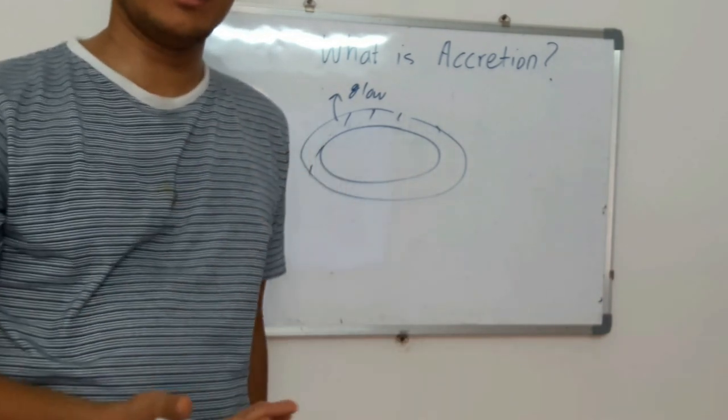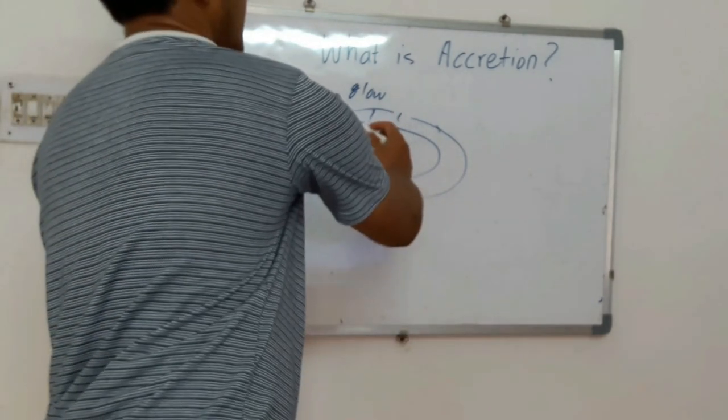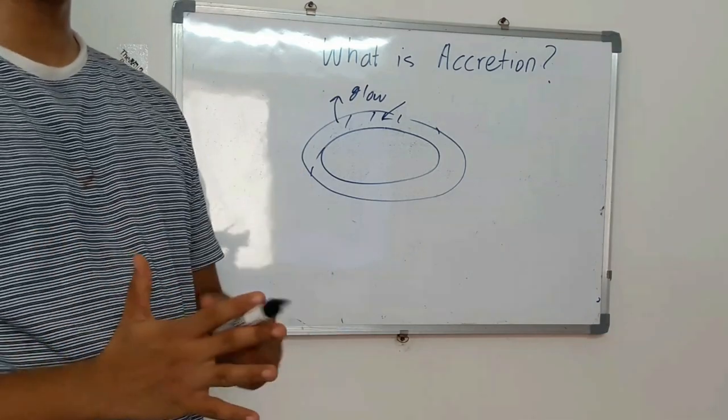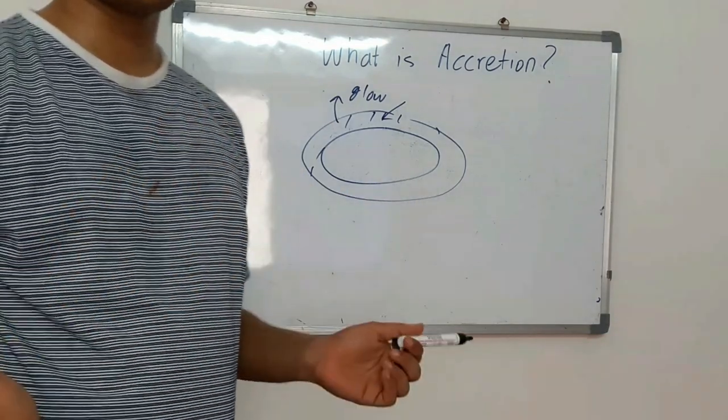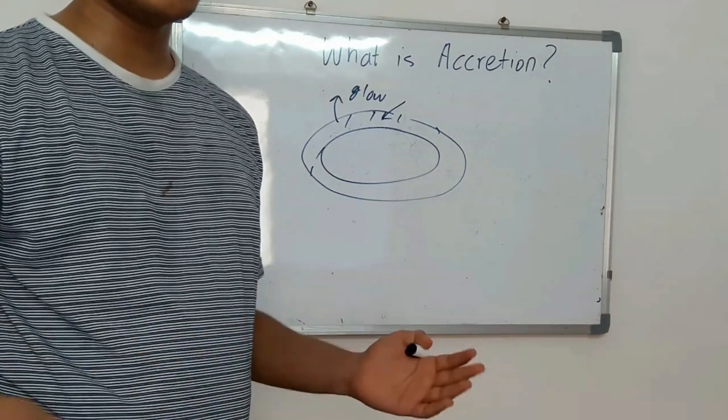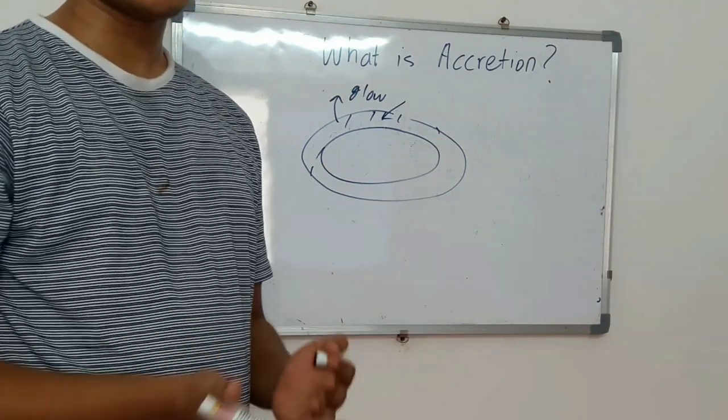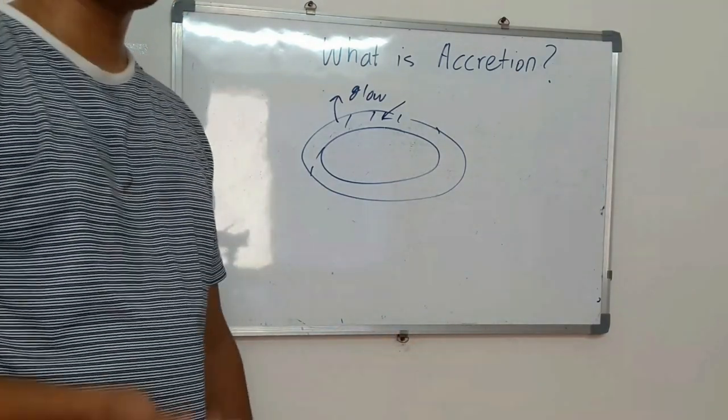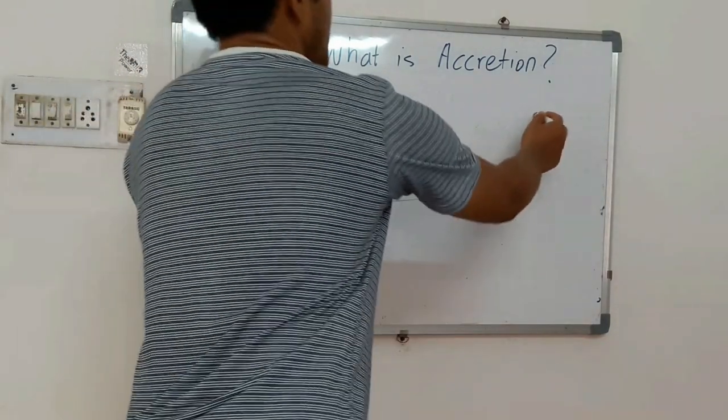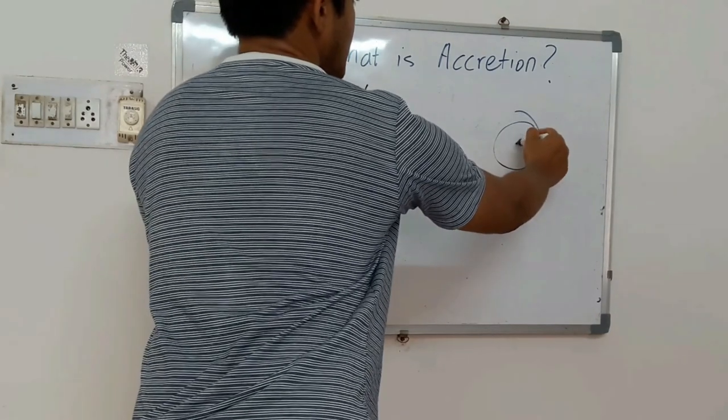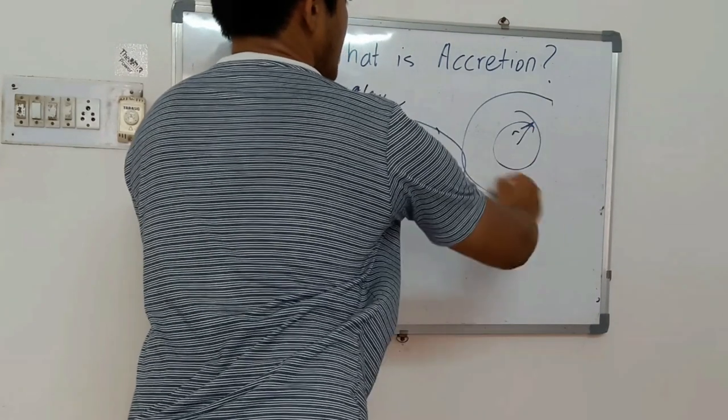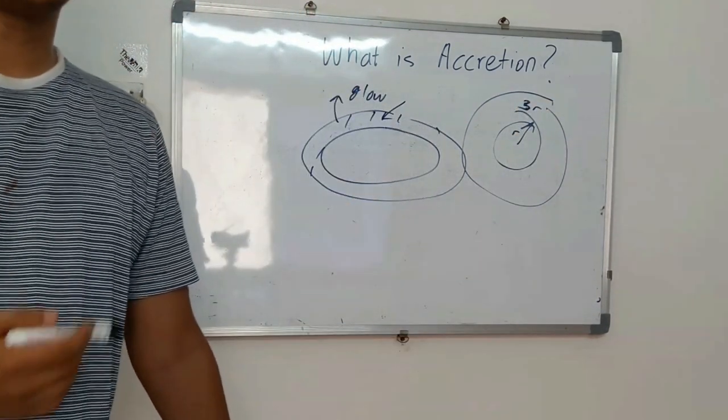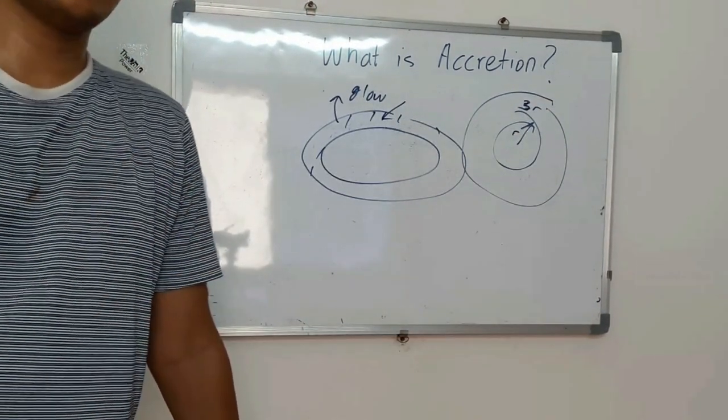Black holes have a disk shape, and that's why the accretion that comes along with it is also a disk. By current estimates, if the Schwarzschild radius is R, then the accretion disk is about three times that size. That's how much matter can get around a stellar object.